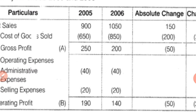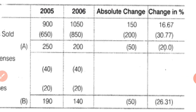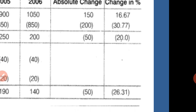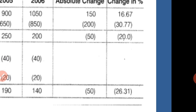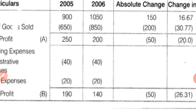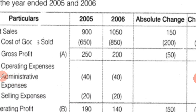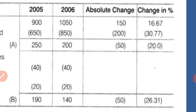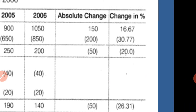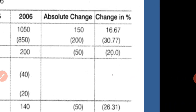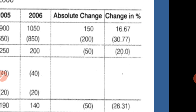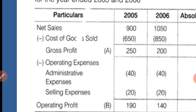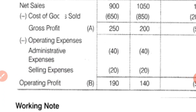The second item — cost of goods sold — is 650 and 850. The difference is 200, and the percentage change is 30.77%. Gross profit is 250 and 200; there is a decrease of 50, which is a decrease of 20.20%.